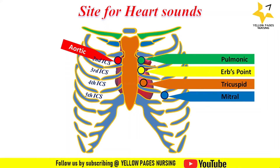We can use the Angle of Louis technique to find the sternal angle so that the ribs can be counted, making it easier to identify the intercostal space where we can auscultate heart sounds. This technique was discussed in a previous video on placement of 12-lead ECG, and the link is provided in the description box below for reference.